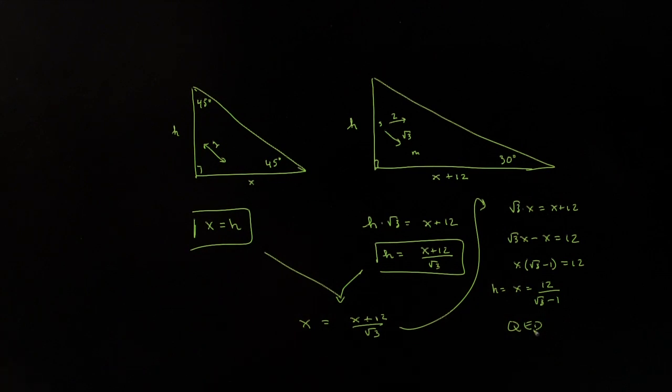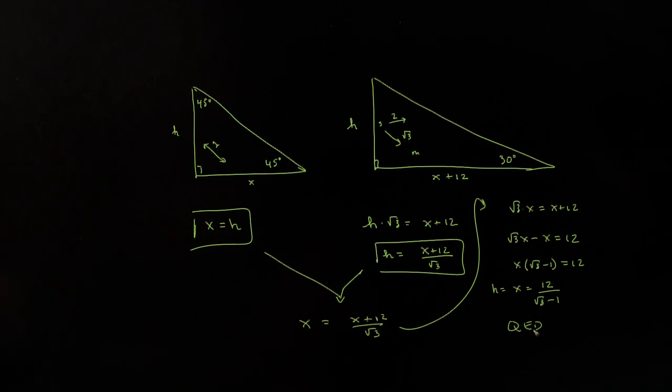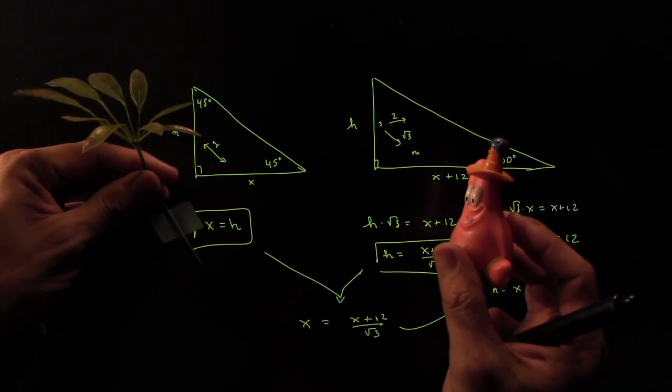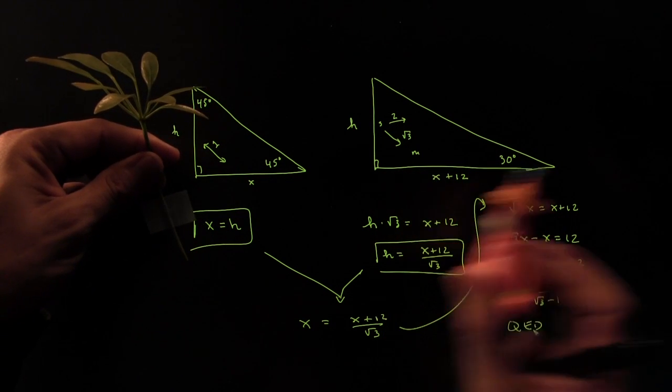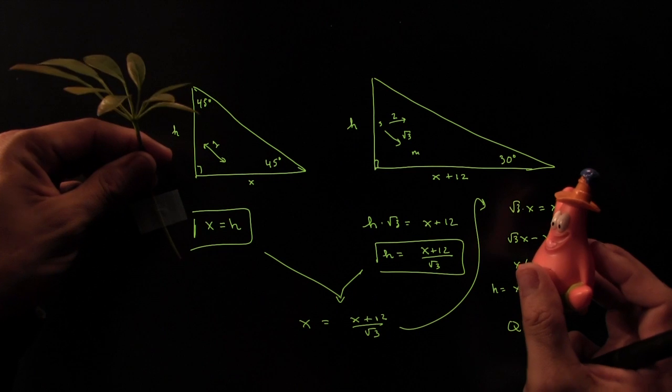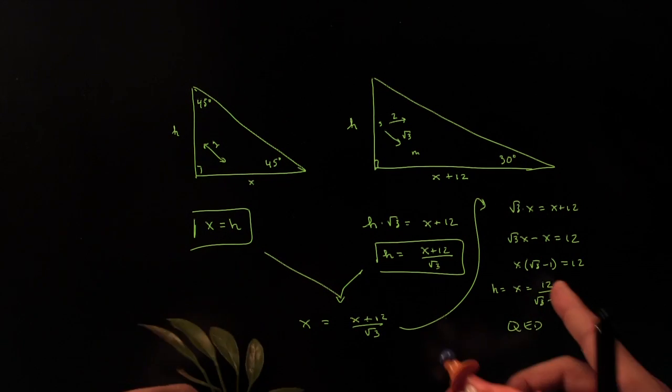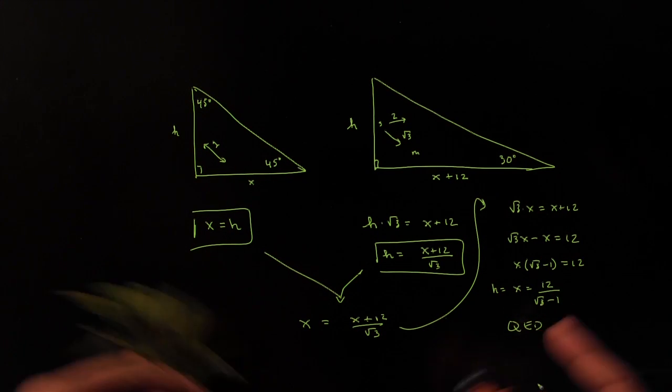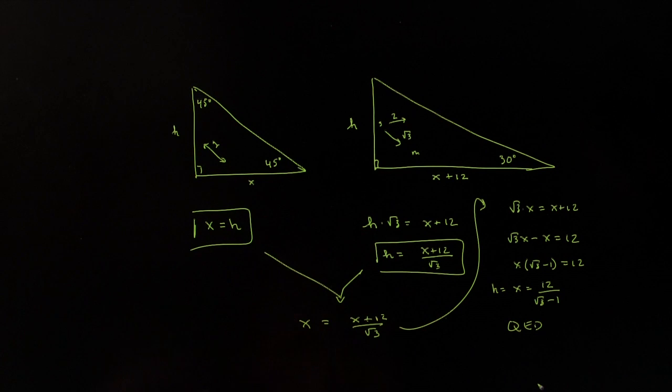That, my friends, is how we were able to measure a tree from far away. Just look at it, 45 degrees. Move 12 feet, 30 degrees, boom, you're done. You know the tree is exactly 12 feet divided by the square root of 3 minus 1. That's exactly how tall the tree is. That's it. We'll see you guys here next time.